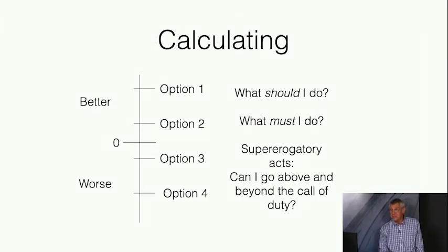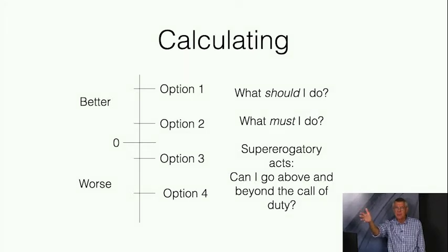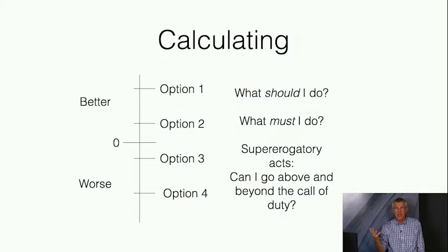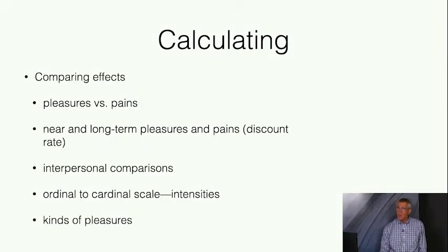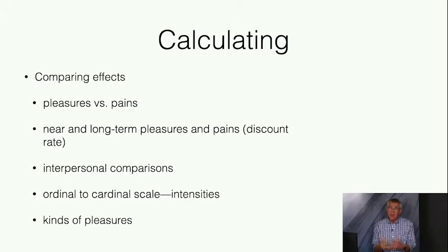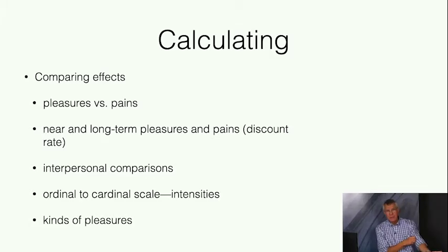Presumably you want to choose one of the best options—but do you have to choose the absolute best one? On some versions of the theory, yes. But what about those others that are almost as good? We're going to have to specify in our theory what to do once we've got that scale, and there are different ways of doing that. My own view is that there's no one right answer: with respect to some kinds of things, we actually demand the best; with respect to others, good enough is okay. It depends a lot on the context.